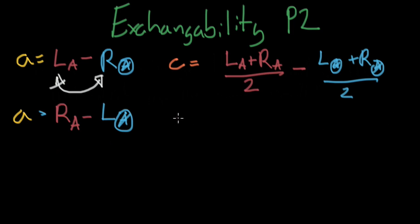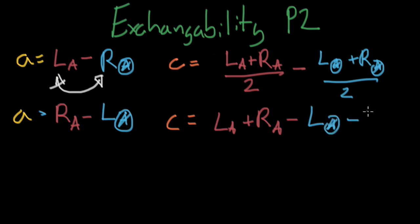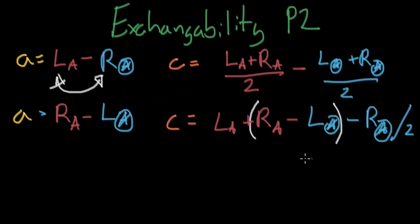Let's write out causation. I'm going to write out causation a little more simply and factor out the two. Causation equals the left-hand side of the population that is treated, plus the right-hand side of the population that is treated, minus the left-hand side of the population that is untreated, minus the right-hand side of the population that is untreated — all divided by two. Notice the right-hand side of the population minus the left-hand side actually equals association, which equals L sub A minus R sub A-not.